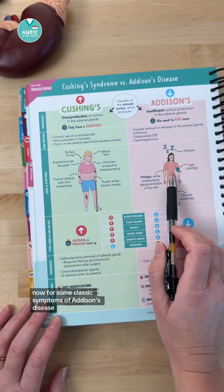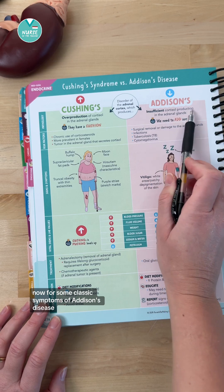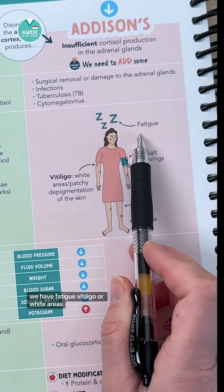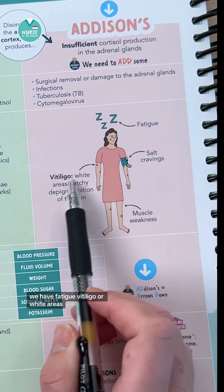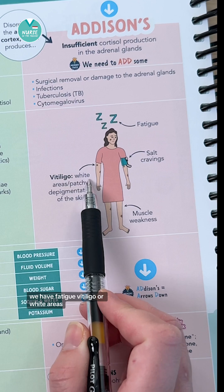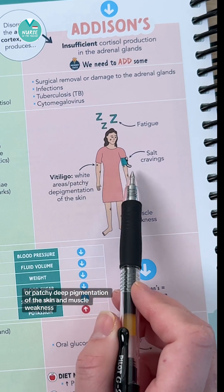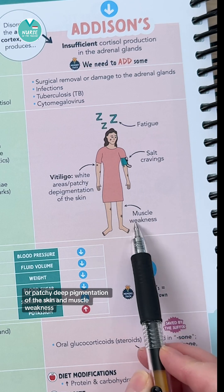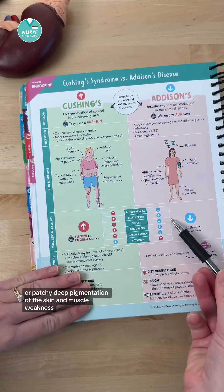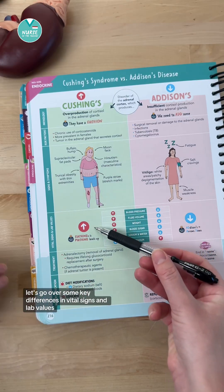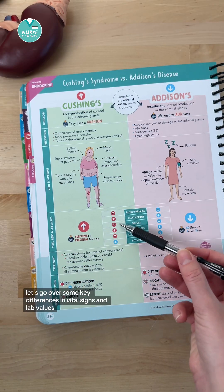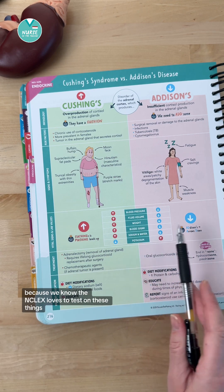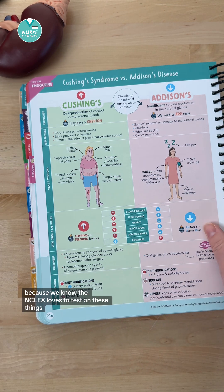Now for some classic symptoms of Addison's disease, we have fatigue, vitiligo — or white areas, patchy depigmentation of the skin — and muscle weakness. Let's go over some key differences in vital signs and lab values, because we know the NCLEX loves to test on these things.